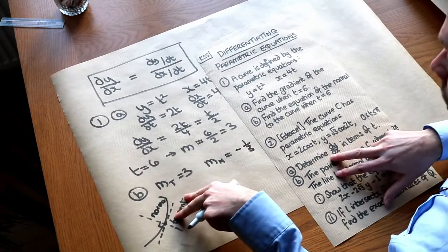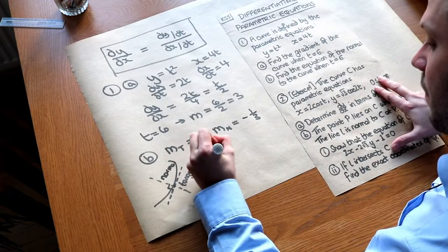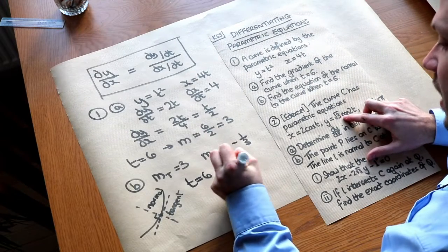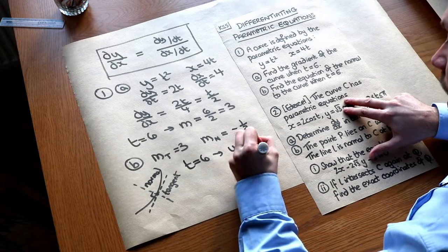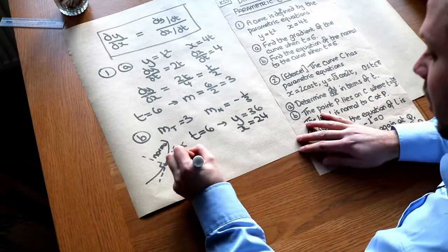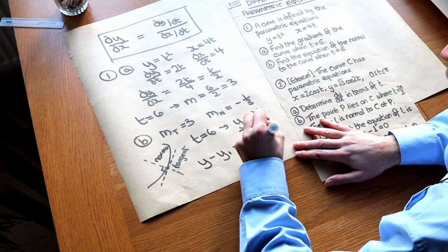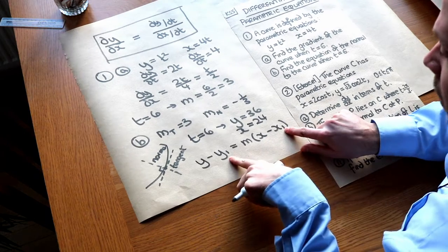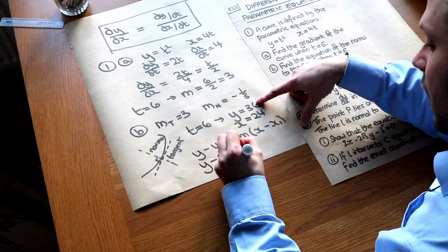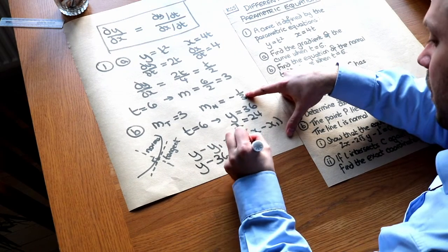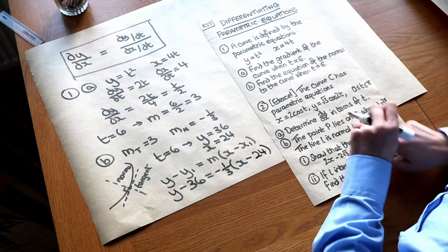We also need a point on the line. When t is 6, we substitute into y to get 6 squared, which is 36, and into x to get 4 times 6, which is 24. Now we have everything we need. The equation of a straight line is y minus y1 equals m times x minus x1. So we get y minus 36 equals minus a third times x minus 24. That's the equation of our normal.